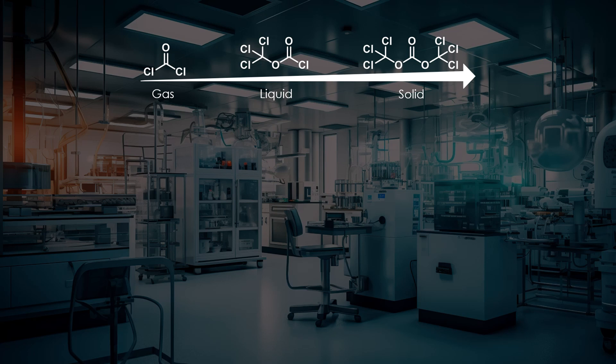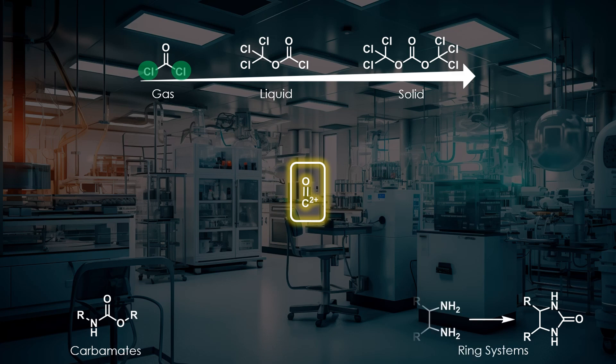But why would chemists want to use phosgene anyway? Phosgene is one of the few reagents where a carbonyl group is bonded to two excellent leaving groups. This property allows it to act as a dielectrophile and introduce an unsubstituted carbonyl group, a reaction useful in medicinal chemistry and drug discovery to create bonds such as ureas and carbamates.